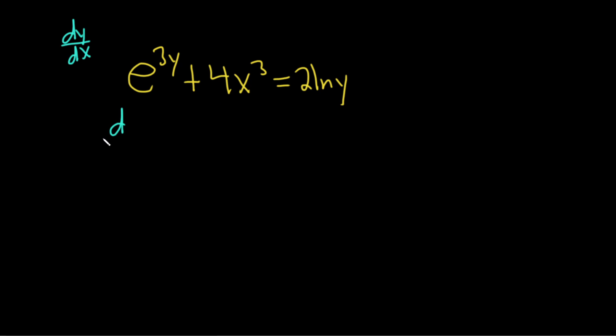So we're taking the derivative with respect to x of the left hand side, e to the 3y plus 4x cubed. And we're also doing it to the right hand side, d/dx of 2 times the natural log of y.